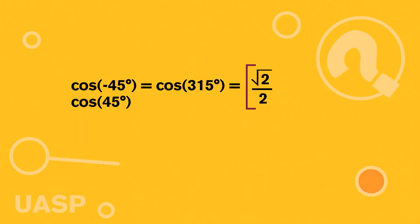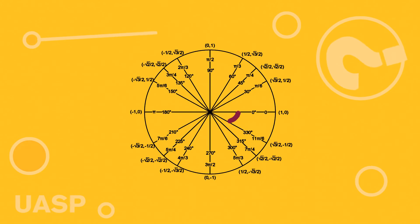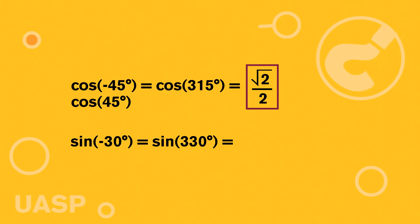So that's our first answer. And then for the second one, for sine of negative 30 degrees, we'll do the same thing. So we're gonna go clockwise 30 degrees. So that'll take us to 330 right there. So it's really saying the sine of 330.